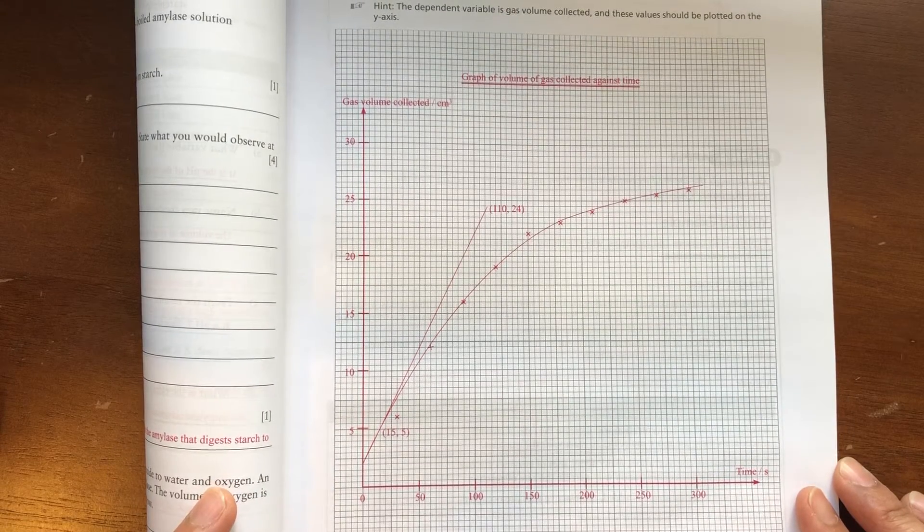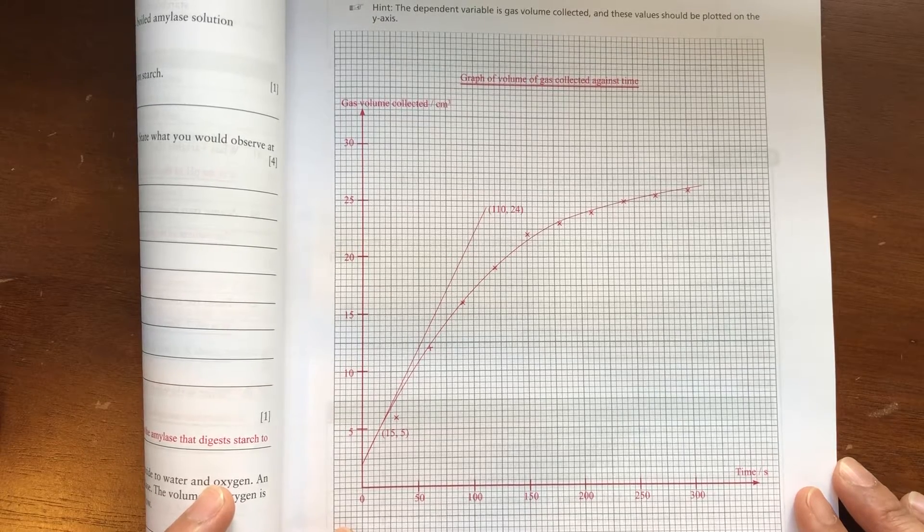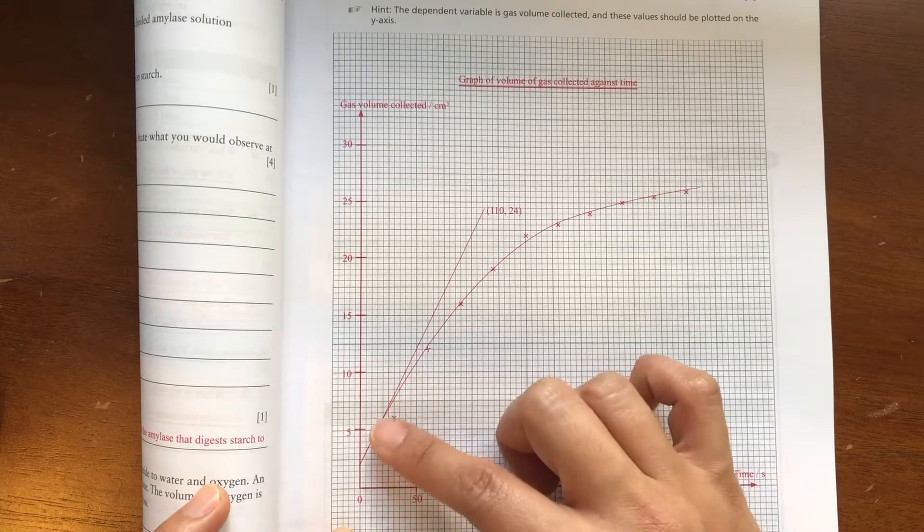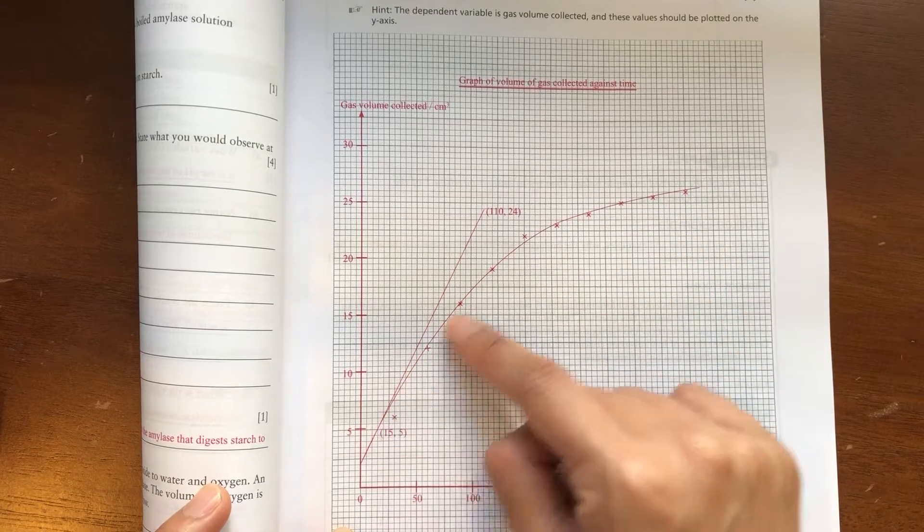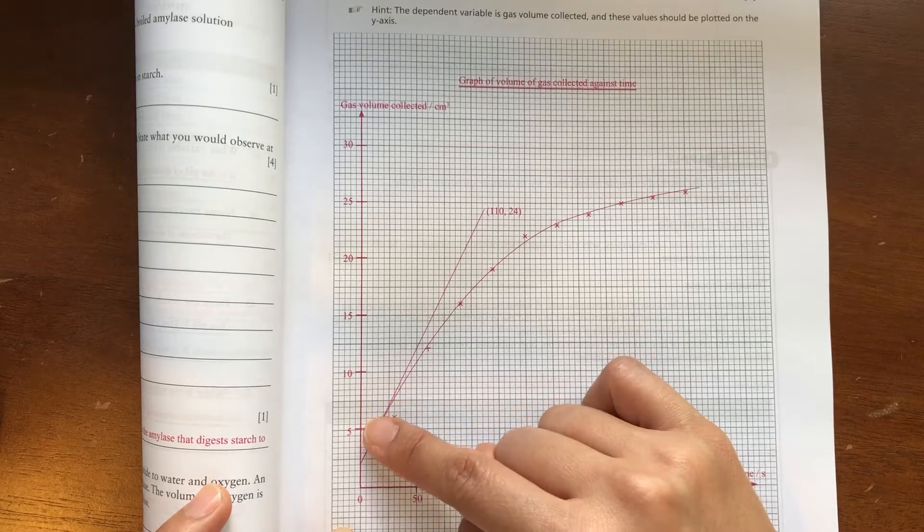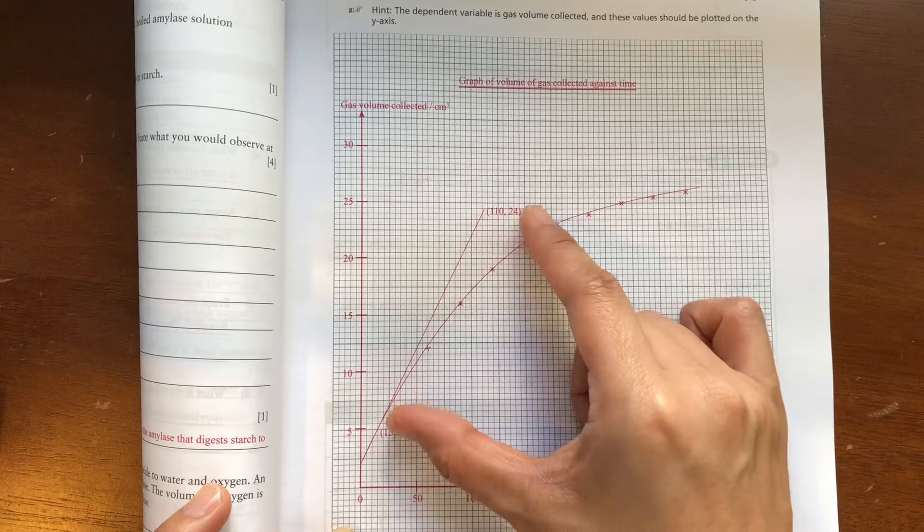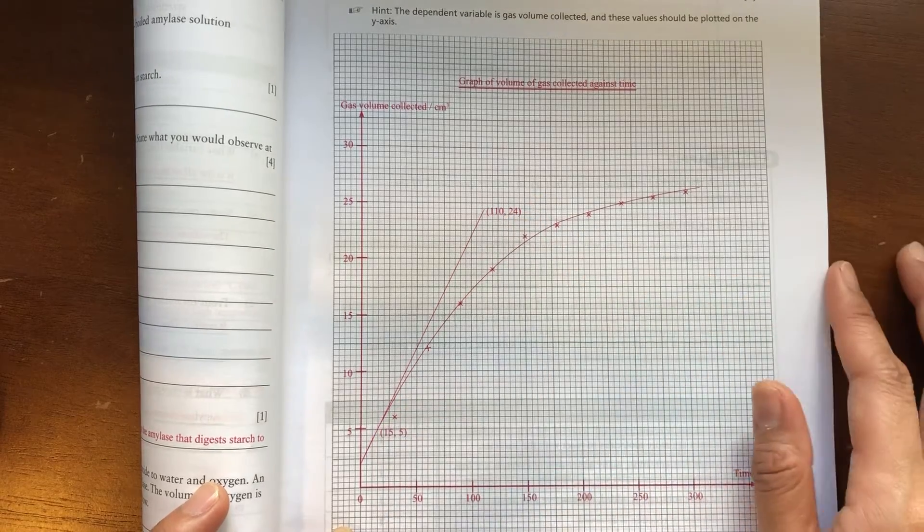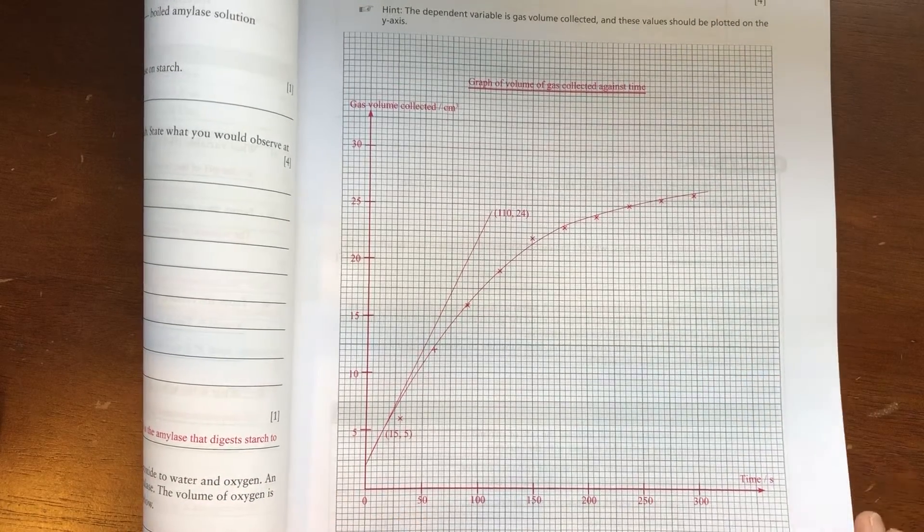So you draw a line of best curve. A line of best fit can be a straight line or a curve. If you look at the distribution of the points, you will notice that it looks more like a curve. So you try to pass a curve through most of the plots and the equal distance between some of the plots that are not on the line. That is what the graph should look like.